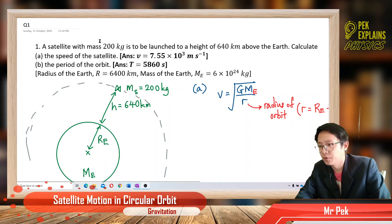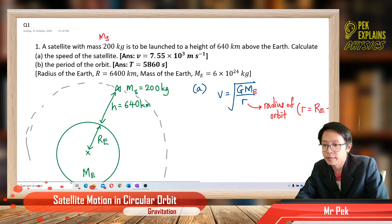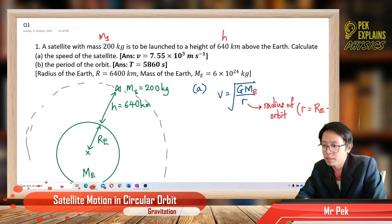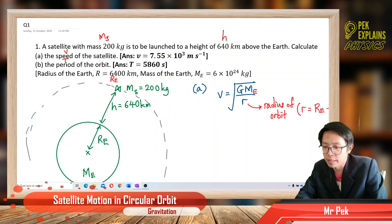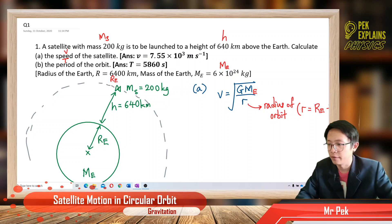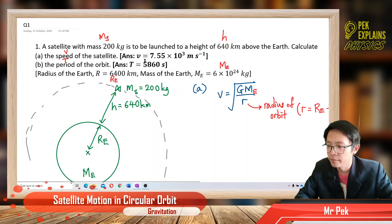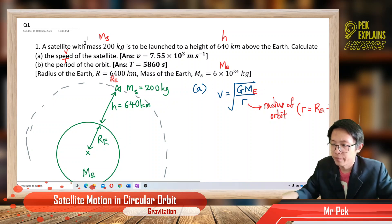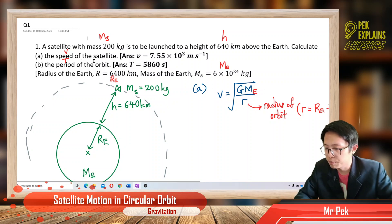Here he gives you the mass of the satellite and this is the height h. He asks you to find the speed and the period. He also gives you the radius of earth and the mass of earth. You have all the information needed. So now, find the speed of the satellite.